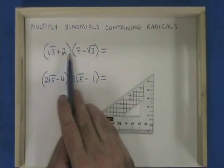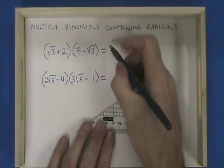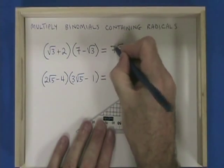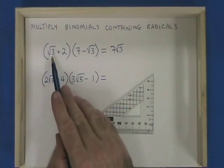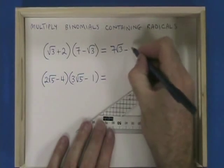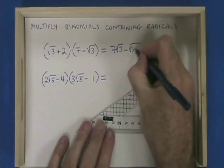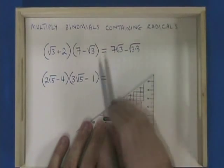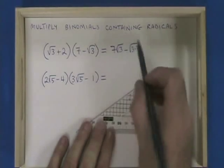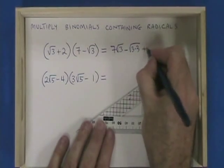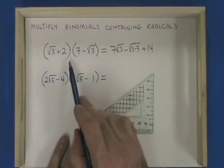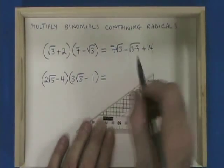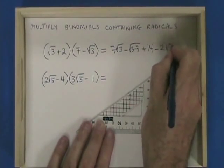First term times first term is root 3 times 7, which gives me 7 root 3. Outside terms: root 3 times negative root 3 give me negative root of 3 times 3. Inside terms: 2 times 7, that's 14. And then last term times last term: 2 times negative root 3 gives minus 2 root 3.